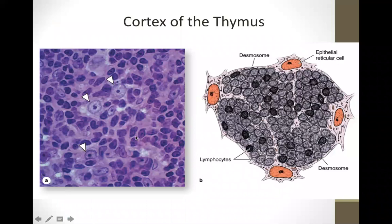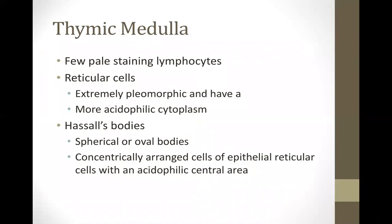This is the cortex of the thymus. The epithelioreticular cells are pointed here — these are your epithelial reticular cells. The thymocytes, or lymphocytes of the thymus, are also visible. At the thymic medulla, you may also find a few pale-staining lymphocytes and reticular cells, but with more acidophilic cytoplasm and extremely pleomorphic shapes.